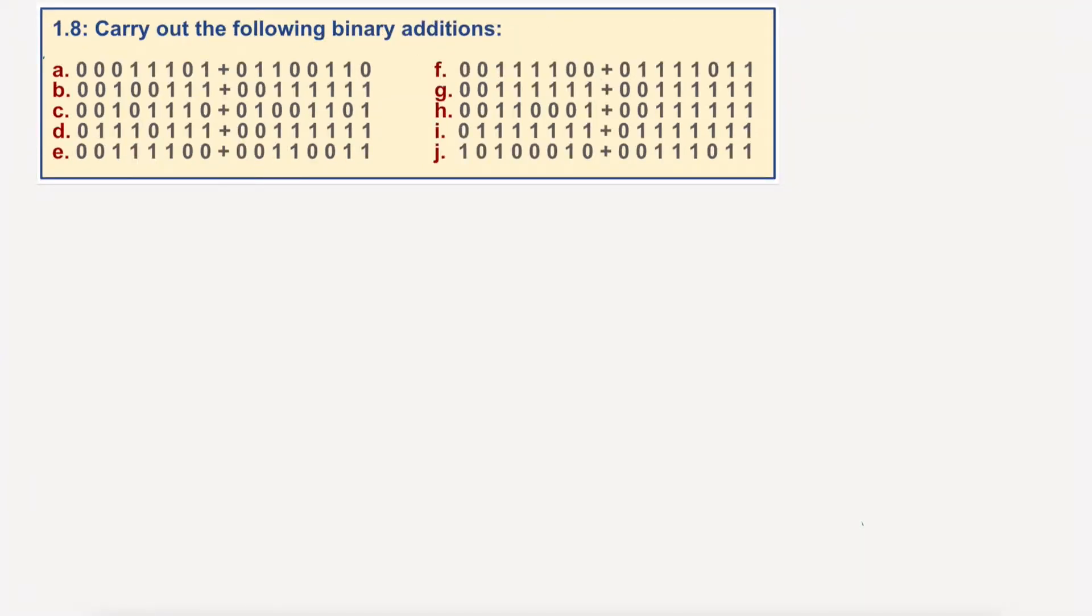Okay, so for this, I am going to write the two numbers down. Zero, zero, zero, one. I'm doing A, by the way. Zero, zero, zero, one, one, one, zero, one.